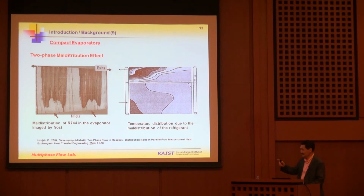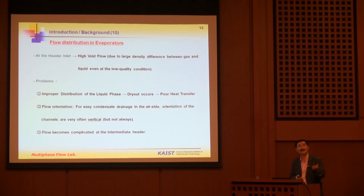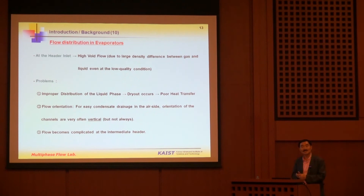In the case of the evaporator, at the header inlet from the expansion valve, we have two-phase mixture coming out with low quality. The evaporator is in a low-pressure condition, which means a large difference between liquid and gas in density and viscosity — i.e., high void fraction — and that causes large flow maldistribution. If there is improper distribution of the liquid phase, dry-out occurs in some portions of the heat exchanger, causing poor heat transfer.